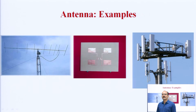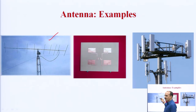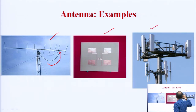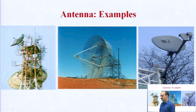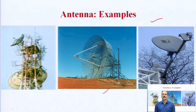Ab baat karte hain antenna ke examples ki. Ye aapka sabse purana aur sabse famous antenna hai — Yagi-Uda antenna — jo gharon mein TV channel ke liye lagaya jaata tha shuruaat mein, jab Doordarshan hua karta tha. Iske andar ye basically antenna array hota hai. Iske baad ye patch antenna hai, phir phased array antenna hai. Ye alag-alag types hain. Then ye aapke parabolic reflector antennas hain — ye aapka DTH TV jo aap ghar pe use karte hain. Ye sab ke sab antenna aapke transmission aur receiving dono mein kaam aate hain, and you can easily identify that these antennas are going to be used widely in telemetry principles.